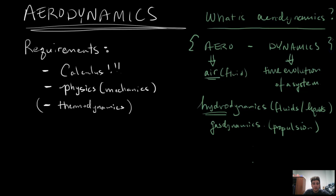Now that you know what aerodynamics is, how are we going to learn it? We can't just start off by talking about the flow of air over a three-dimensional wing, calculating its tip vortices, calculating its lift coefficient — we can't start off with all this. We've got to start really basic. So the way to talk about aerodynamics is we need to know the type of flow that we're talking about: type of flow.